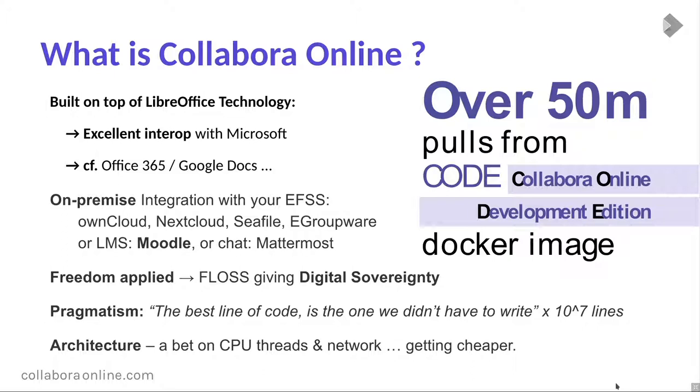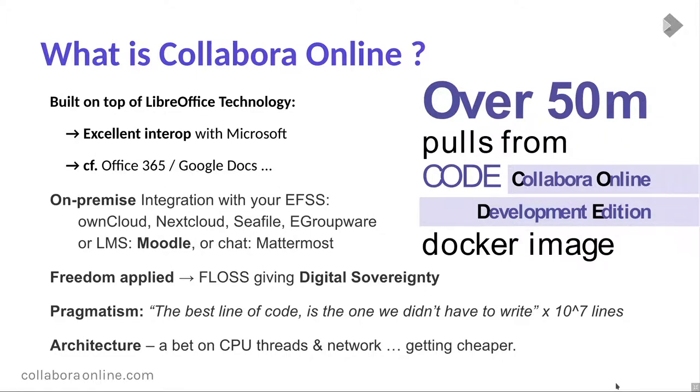We can deliver huge value very fast. We've tried to avoid rewriting the eight million lines of code that is LibreOffice — or is it fourteen million lines that is Microsoft Office — in JavaScript. Partly because JavaScript is arguably the worst language in the world. Rewriting code doesn't help anyone — it duplicates the amount of code, doubles the number of bugs, and halves the number of people to work on each of them. The best line of code is the one you never have to write.